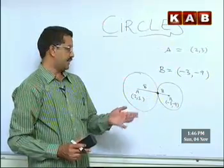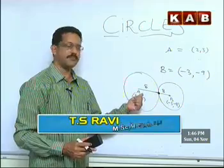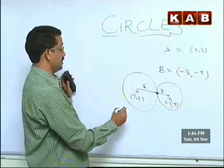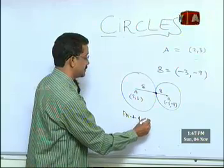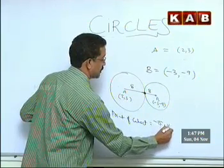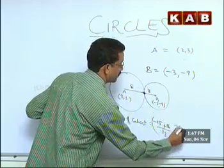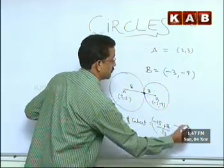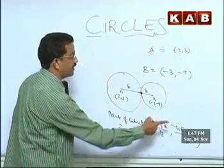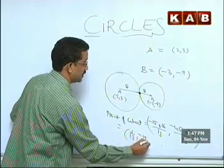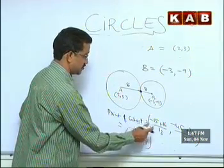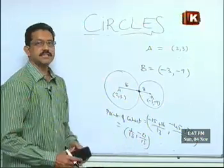We use the section formula — divide the line joining A and B in the ratio 5:8 internally. The point of contact = [(5·x₂ + 8·x₁)/13, (5·y₂ + 8·y₁)/13]. Substituting the values, the point of contact is (1/13, −21/13). This is a 7-mark question.